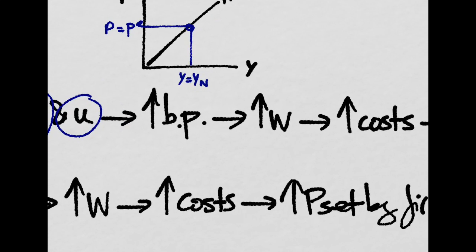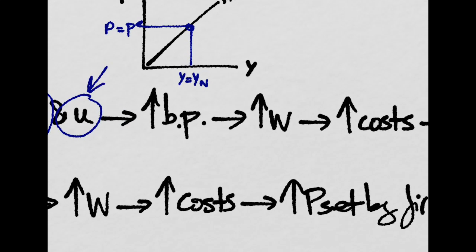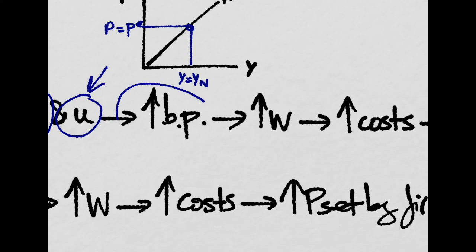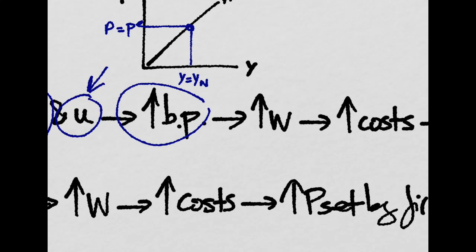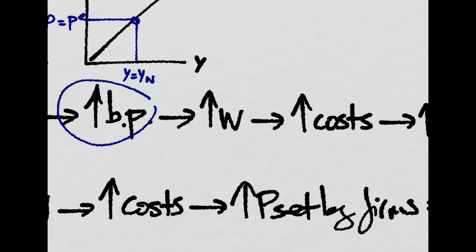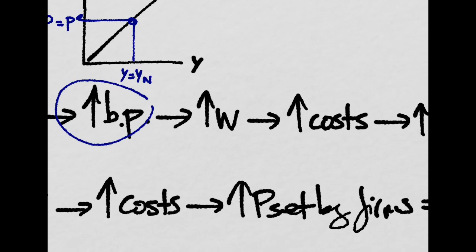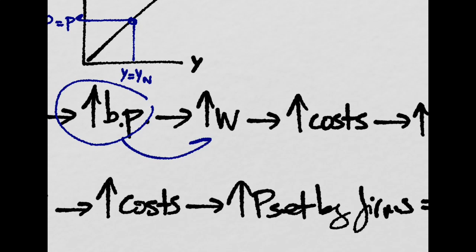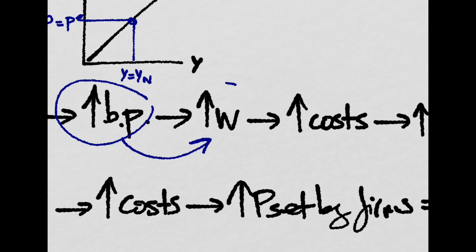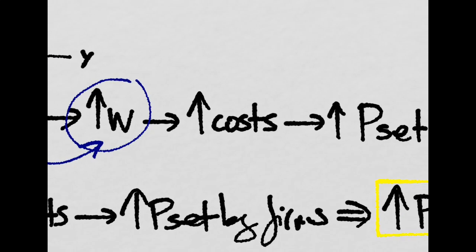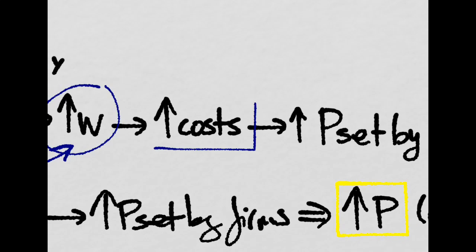And if the unemployment rate is lower, then workers have higher bargaining power. If they have higher bargaining power, they will be able to increase their salaries, the nominal wage. And if they increase the nominal wage, firms will face higher costs.